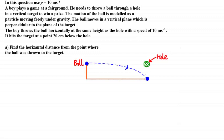Hi guys and welcome to this tutorial where we're going to be solving a two-part problem on projectile motion. A boy plays a game at a fairground — he needs to throw a ball through a hole in a vertical target to win a prize. The motion of the ball is modelled as a particle moving freely under gravity, moving in a vertical plane perpendicular to the plane of the target. The boy throws the ball horizontally at the same height as the hole with a speed of 10 metres per second, and it hits the target at a point 20 centimetres below the hole.